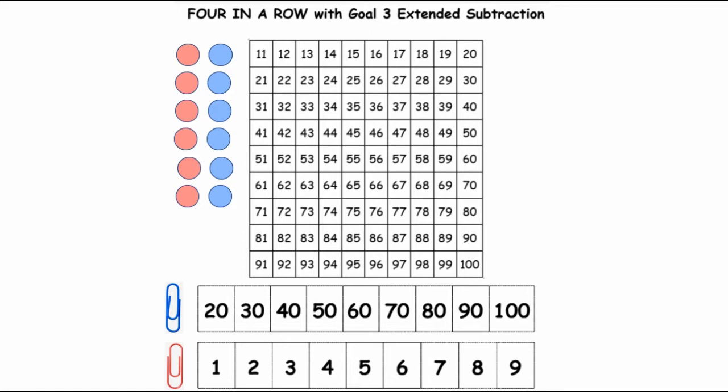to color in boxes as they play the game. You also need two markers of some sort that can be moved along the 20 through 100 grid and then the 1 through 9 grid down at the very bottom of the sheet. In this case, I've got paper clips.